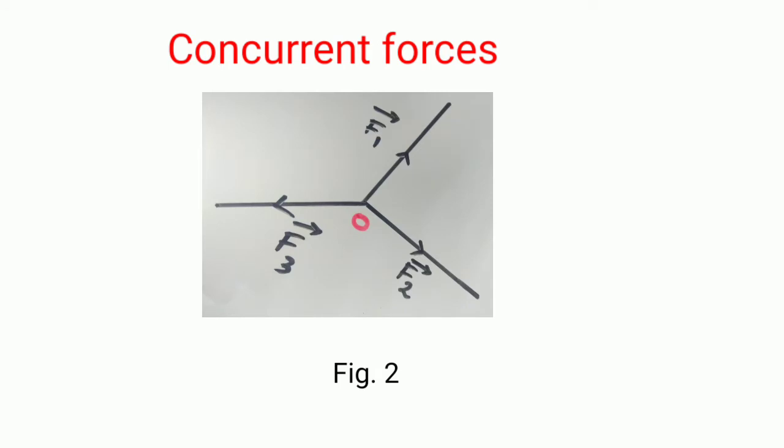In Figure 2, there are three forces: F1 vector, F2 vector, and F3 vector. All three forces act at single point O. Since all three forces meet at a single point O, they are called concurrent forces. So when any number of forces on a body act at a single point, those forces are called concurrent forces.